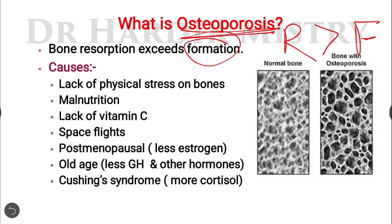Which are the causes of Osteoporosis? First, lack of physical stress on the bones. As we already know, the strength of the bone is directly proportional to the stress given on that specific bone. Second, malnutrition where the calcium concentration has been decreased inside the diet. Third, lack of vitamin C.